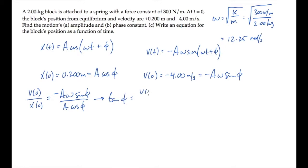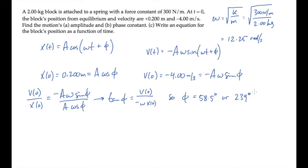Substituting the initial velocity of minus 4 meters per second, the known angular frequency, and 0.2 meters for the initial position, and then taking the inverse tangent, we find that the phase constant is 58.5 degrees. However, due to the quadrant ambiguity in the inverse tangent function, it might also be 180 degrees larger — 239 degrees. We need to sort out which value is correct.